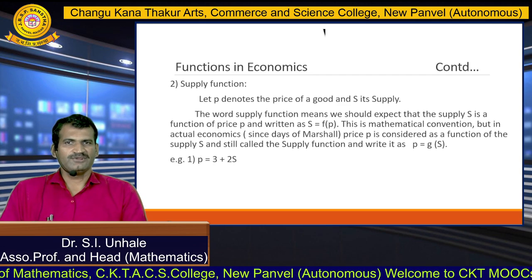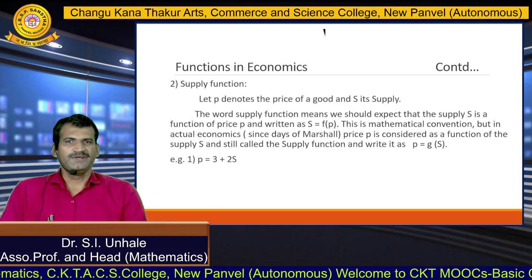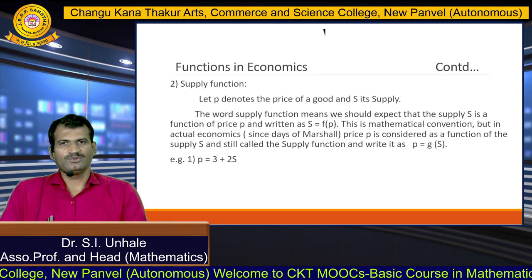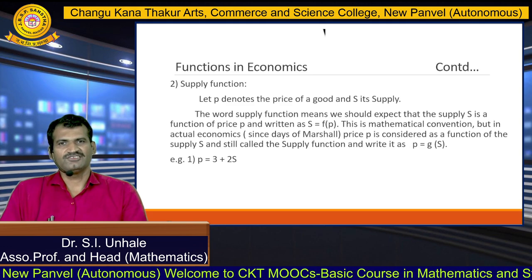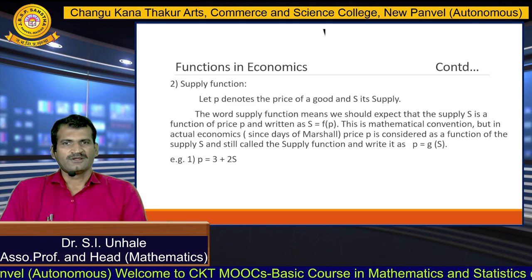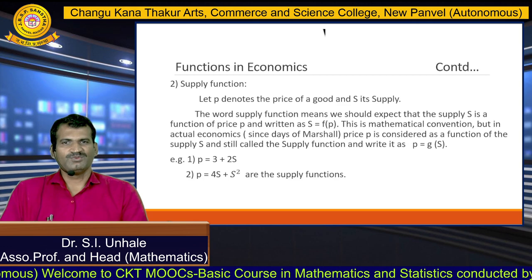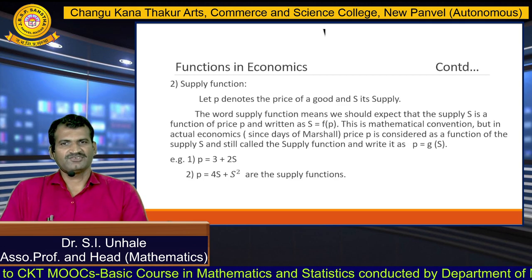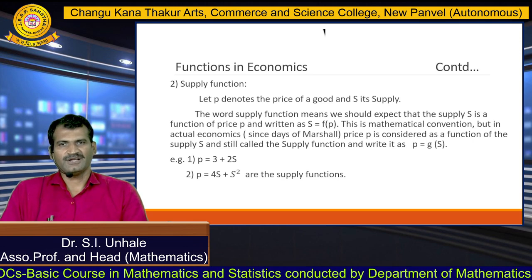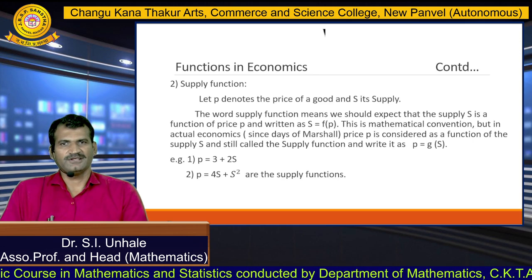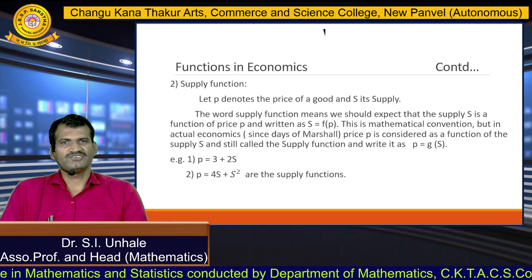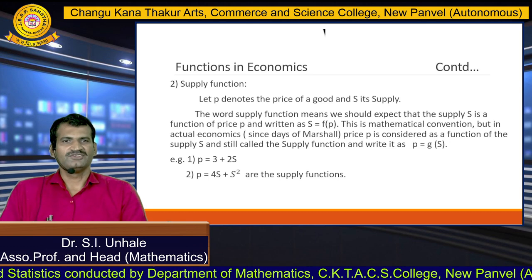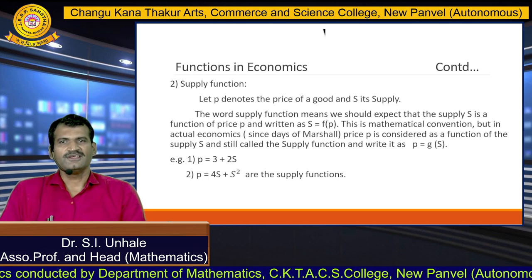Now we can see examples of the supply function. p equals 3 plus 2s, where p is the price, 3 and 2 are constants, and s is the supply. Another example: p equals 4s plus s². This is also a supply function where 4 is the constant, p is the price, and s is the supply. So the second type of function in economics is the supply function, where p equals g of s.